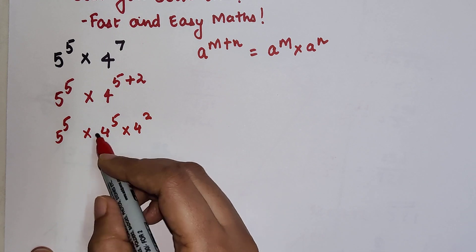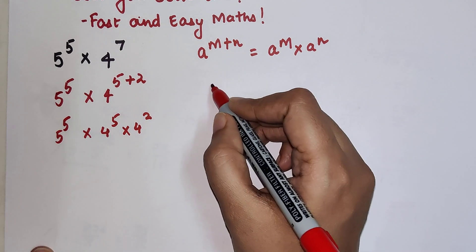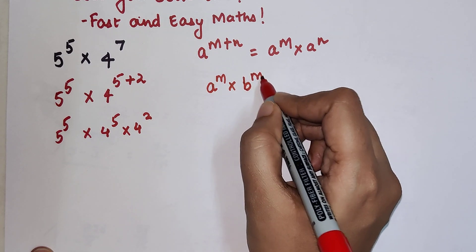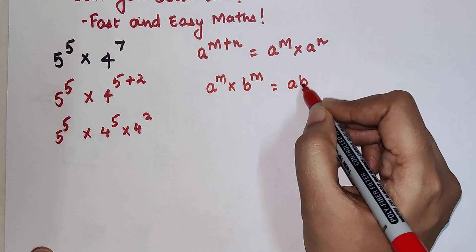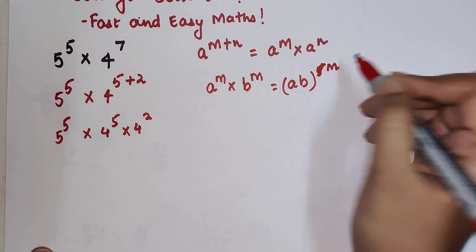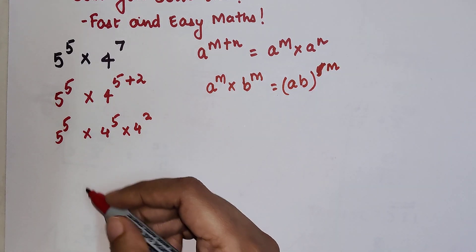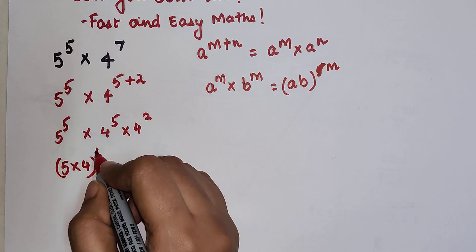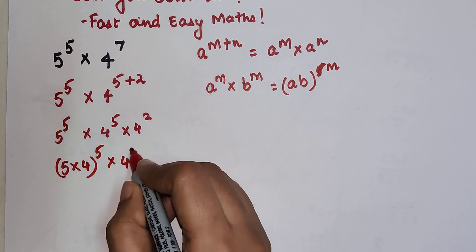Now here what we have is, a raise to m into b raise to m can be written as a into b the whole raise to m. So here I can write 5 into 4 the whole raise to 5 into 4 square.